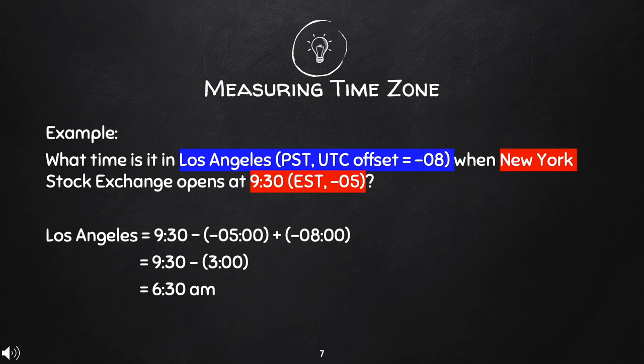What does subtracting the UTC offsets mean? Observe the problem again. Highlighted in blue is Los Angeles and highlighted in red is New York. The formula here is: Los Angeles equals 9:30 (New York time) minus (negative 5, the UTC offset for New York) plus (negative 8, the UTC offset for Los Angeles). So, Los Angeles equals 9:30 minus negative 5 plus negative 8.